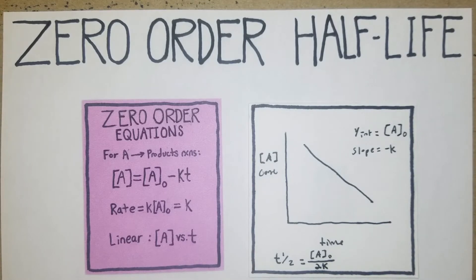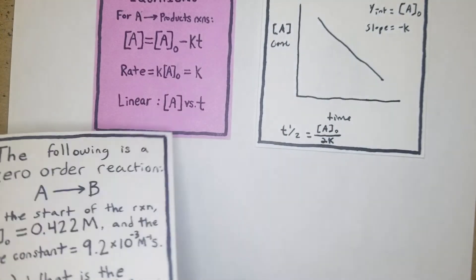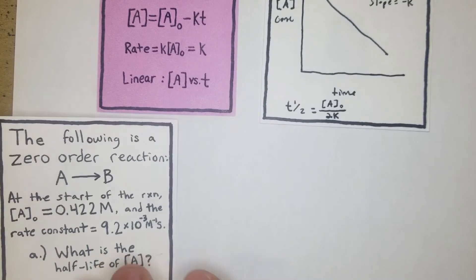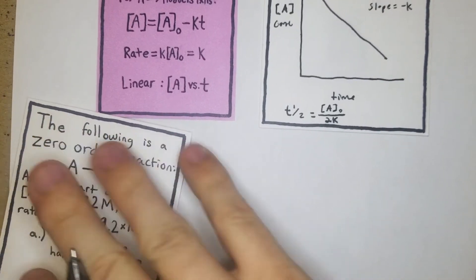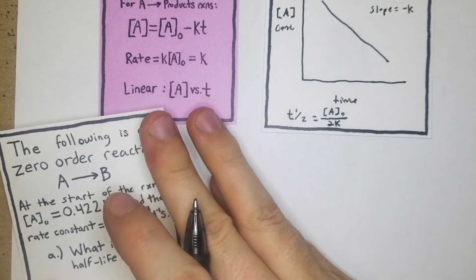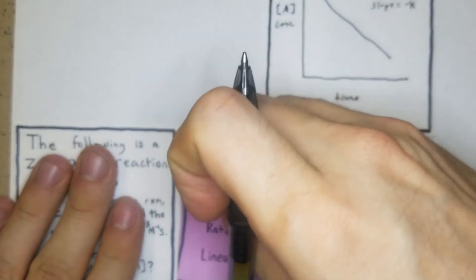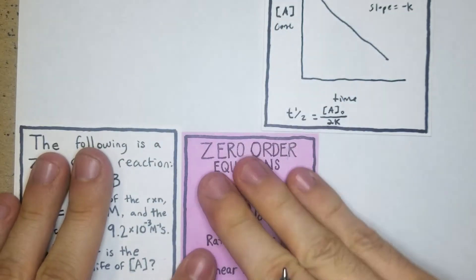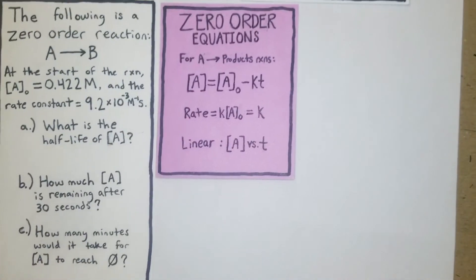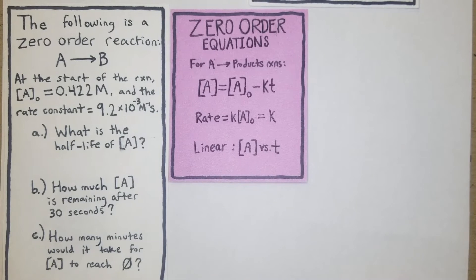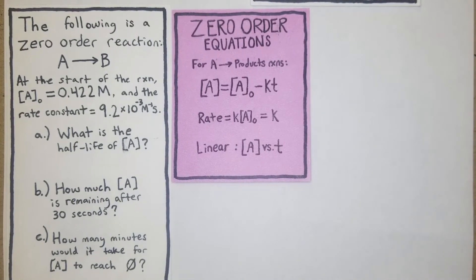So with that said we're going to jump into the first problem down here. This is one of those multi-step problems and I prepared so I'll just carry these down. The following is a zero order reaction: A yields B, nice and simple.